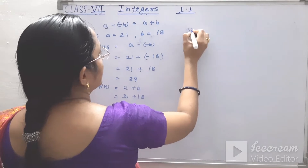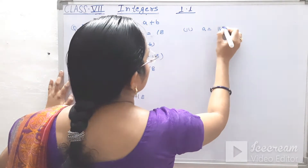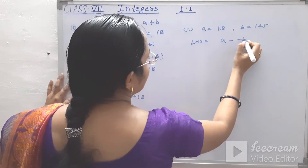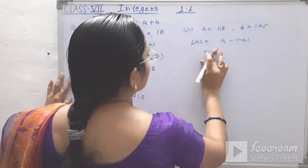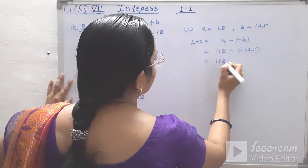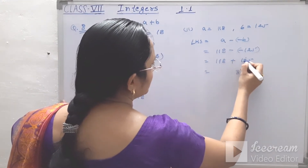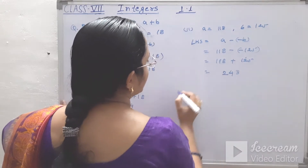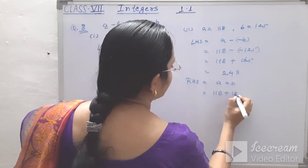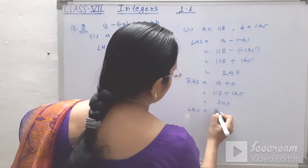Second: a equals 118 and b equals 125. Left hand side: 118 minus minus 125 equals 118 plus 125 equals 243. Right hand side: a plus b equals 118 plus 125 equals 243. Left hand side equals right hand side.